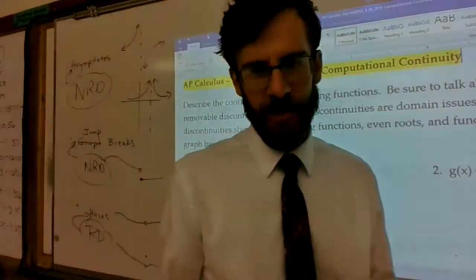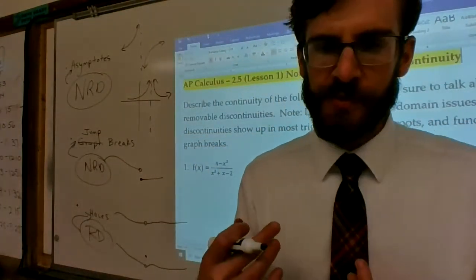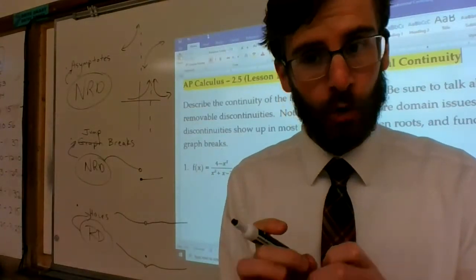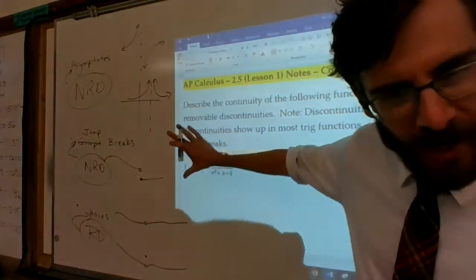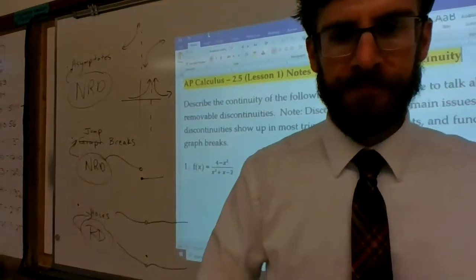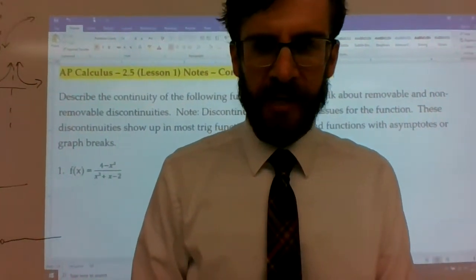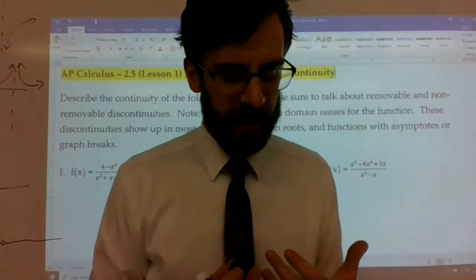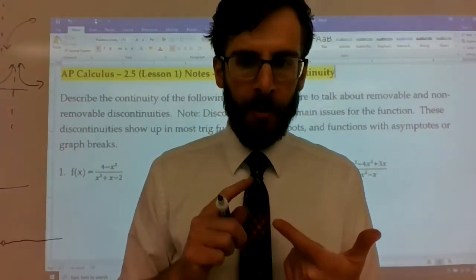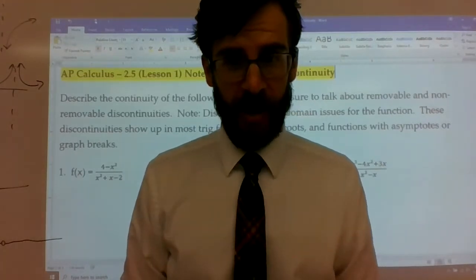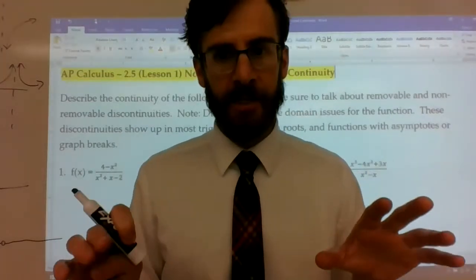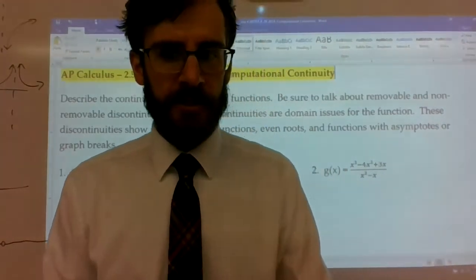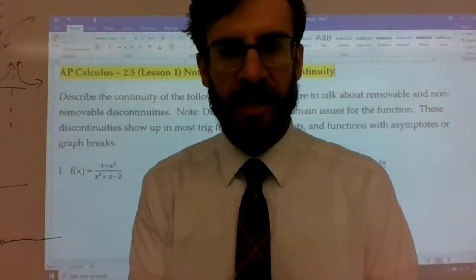You guys saw that in the video on computing limits graphically. Now, when we're talking about functions — especially rational ones with fractions — we have to start thinking that there are both asymptotes and holes in the graph that could potentially cause domain issues. It's not just one or the other; sometimes both exist in the same function.